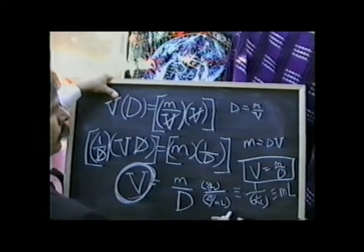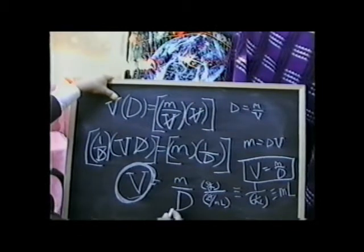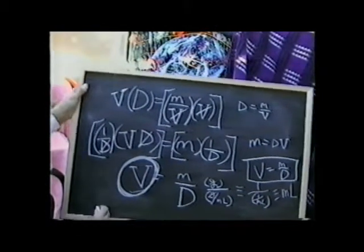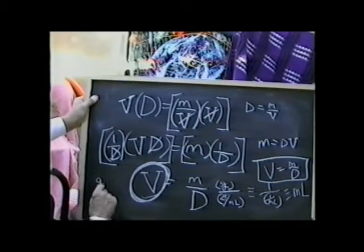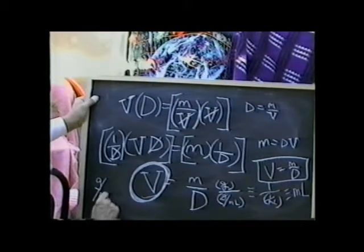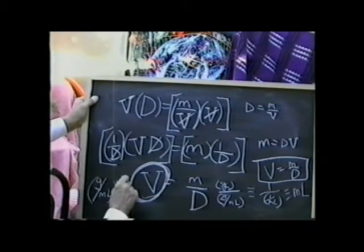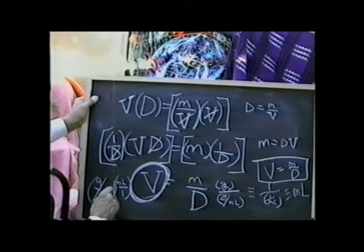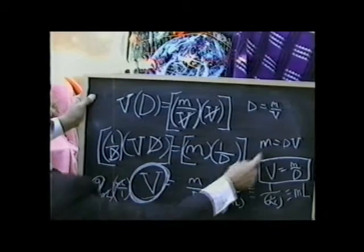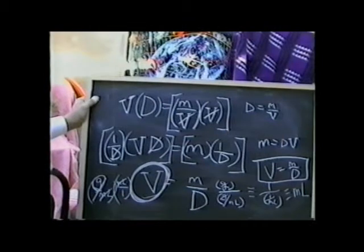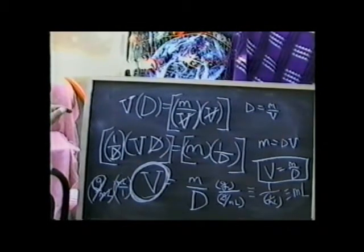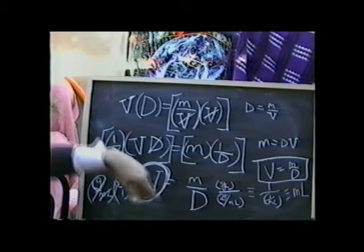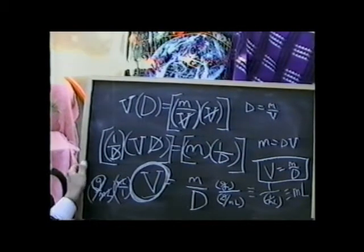For density times volume, density is grams per milliliter. The volume is milliliter over one. We see milliliters would cancel. We'd be left with grams. That's what mass is. So analyzing the units will guarantee that our problem is set up correctly, and we can't get the problem wrong.